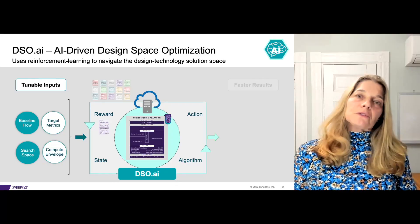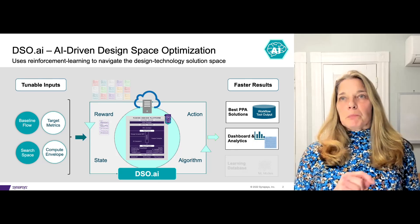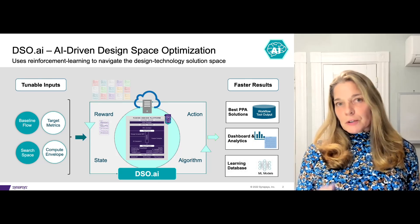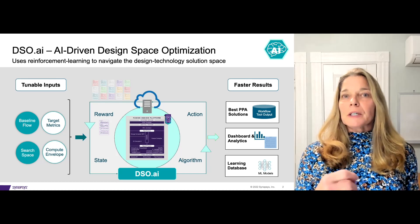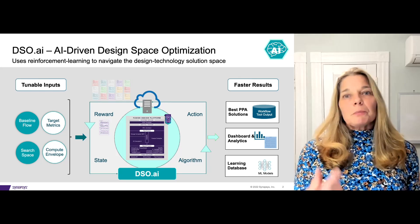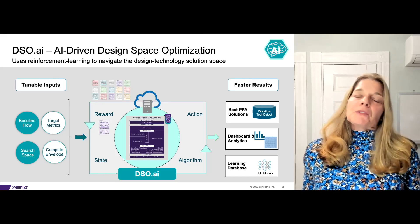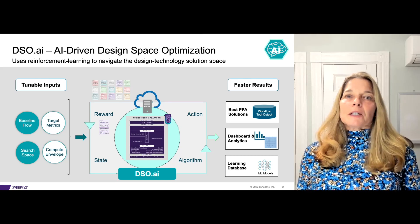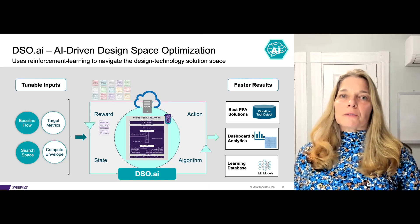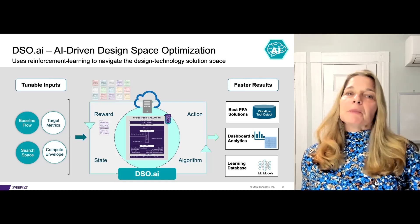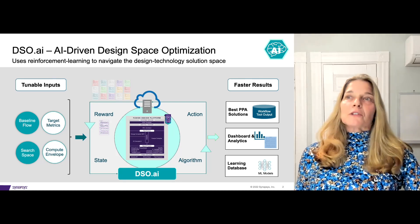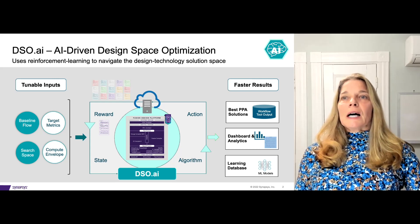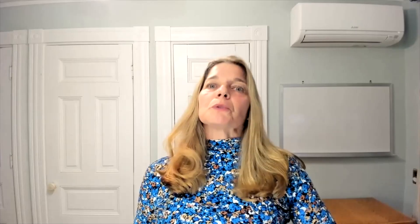DSO AI optimizes the design search space and tunes the workflow to provide the user with the best point tool results. The output of the workflow is what's generated by your underlying implementation tools — Design Compiler, Fusion Compiler, PrimeTime, and Star. You also get analytics in the form of graphs and dashboards, reports that can help the designer look at the impact of the parameters on their design. And because DSO AI is a learning system, it captures statistical learnings in a training database that you use for future sessions.